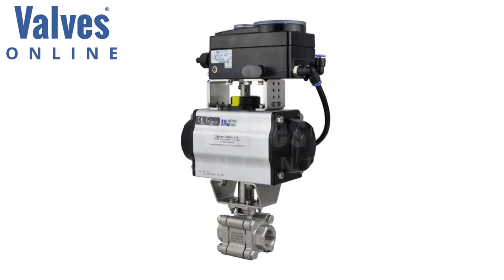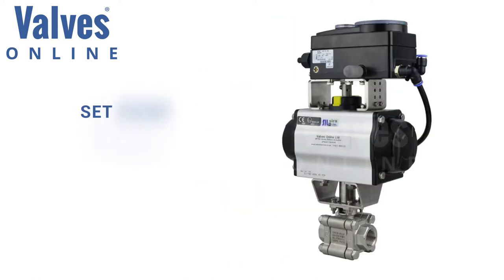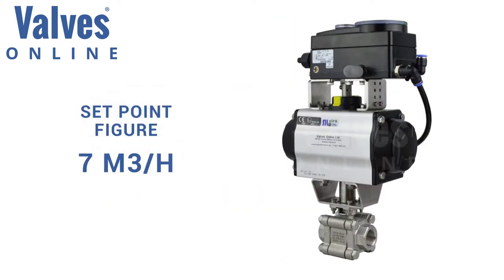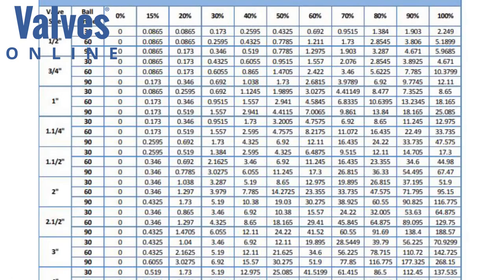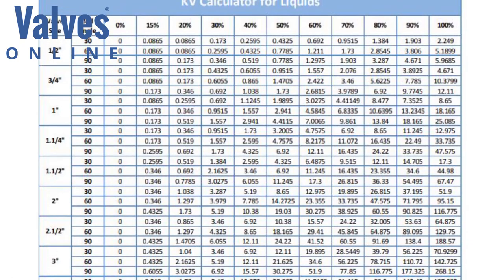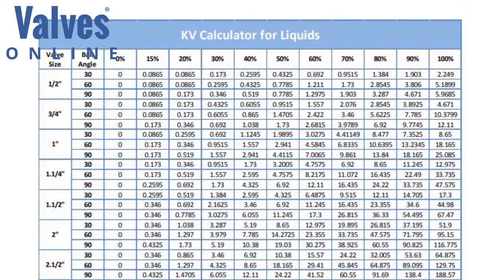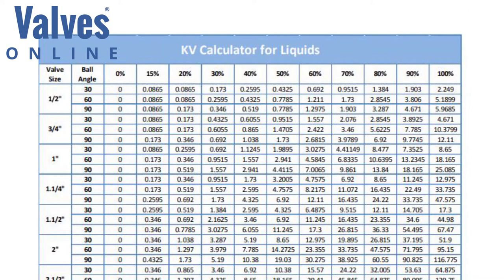Here's an example. An engineer wants to control or maintain a flow in a pipeline. The engineer has a set point figure of seven cubic meters per hour which meets the requirement. On the chart, the engineer looks for a figure that matches or is close to the flow requirement of seven cubic meters per hour, and finds a figure of 6.8335, which is close to what is needed and roughly matches the pipe diameter currently in the process.